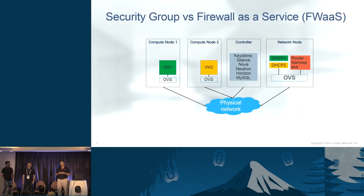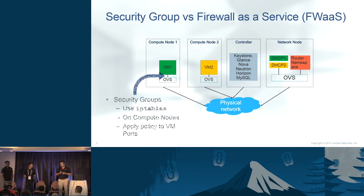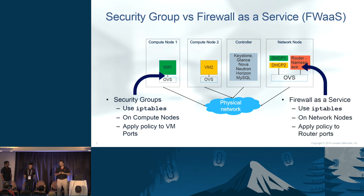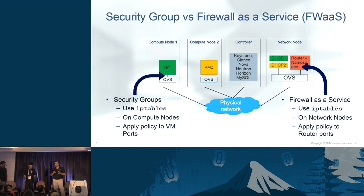To give a background: the difference between a security group and Firewall as a Service is, in a simple OpenStack setup with compute nodes, a controller, and a network node, the security group is realized using IP tables on compute nodes and secures traffic coming out of VM ports. Firewall as a Service also uses IP tables but runs inside the network node, specifically on the router namespace, applying policies on the router port to secure traffic going from one network to another.